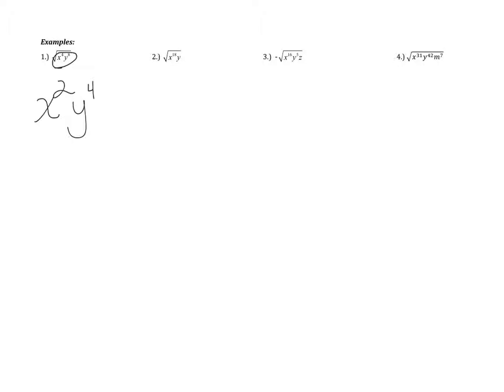In number two, x to the eighteenth has an even exponent, so it's a perfect square. Pull out x to the ninth. But you have a y left on the inside, and since you don't know what y is, you can't break that up. So the y stays on the inside, giving you x to the ninth square root of y.